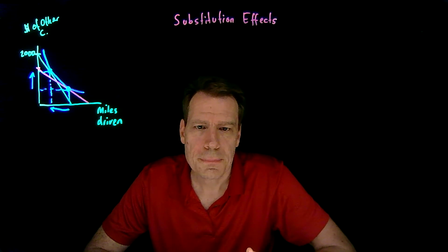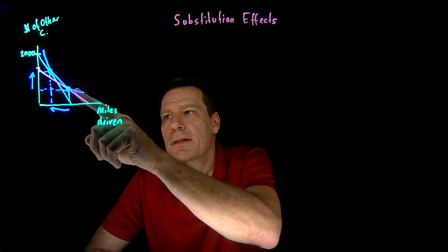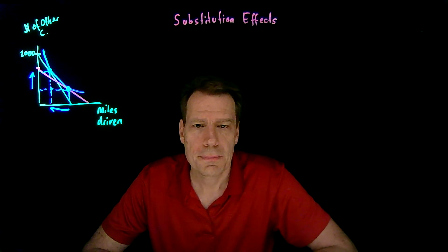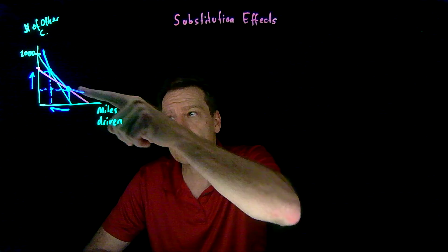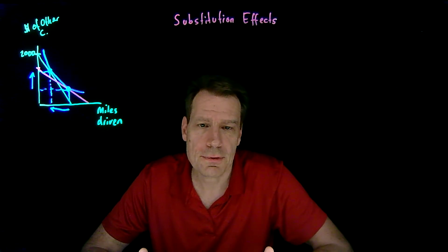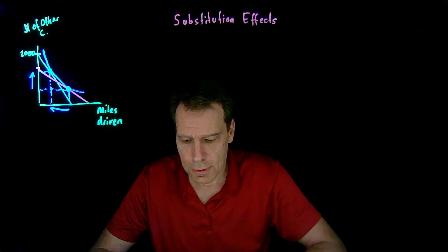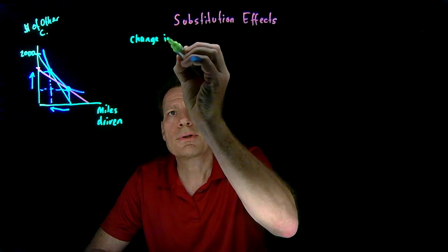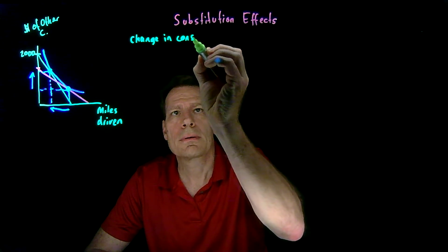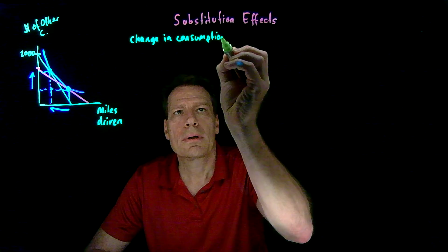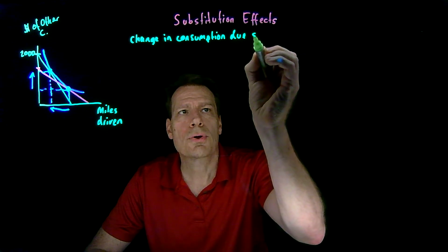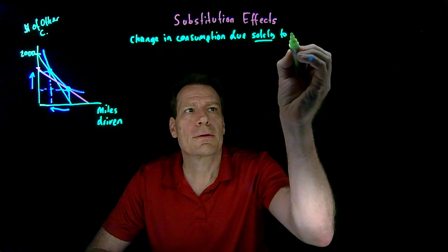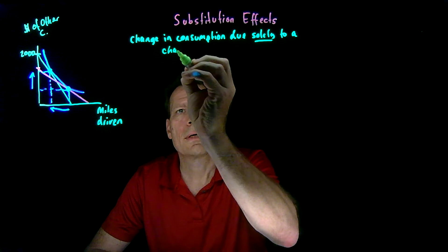This is what's called a substitution effect. It's a change in behavior that's due solely to changes in opportunity costs as captured in the slopes of the budgets. It's not due to anything else. We're on the same indifference curve, but we behave differently because we face different prices. So a substitution effect is a change in consumption that's due solely to a change in opportunity costs.